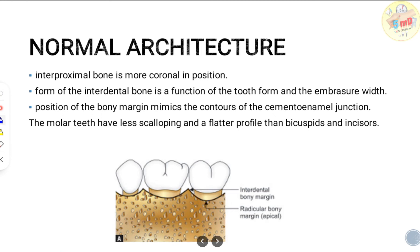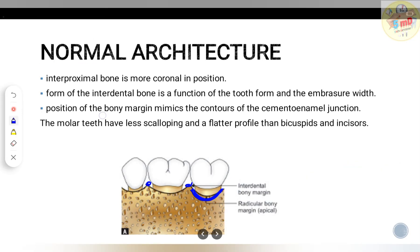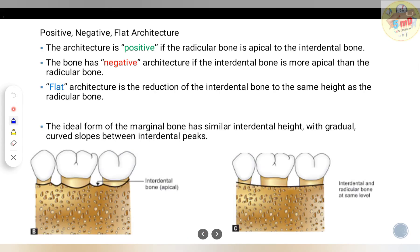The normal architecture of bone is a positive architecture. As you can see here, the interdental bone is at a higher level than the radicular bone. The position of the bony margin mimics the contour of the cemento-enamel junction. In the molar region there is less scalloping than in the anterior teeth. This is what is meant by normal or positive architecture.